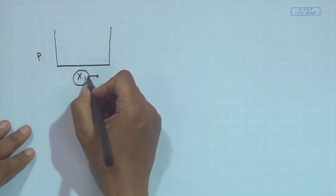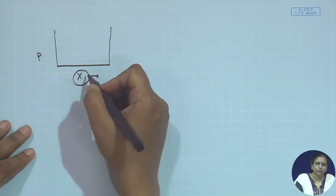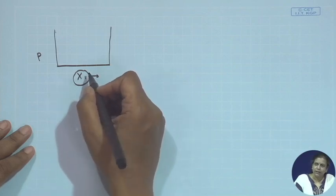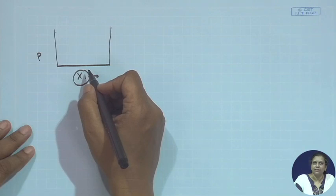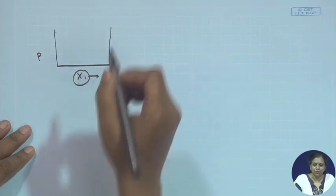Whenever we are plotting for this class, just to avoid any confusion, we would like to plot the mole fraction of the more volatile component on the x-axis. With that we plot the partial pressure of component one, partial pressure of component two, and the total pressure over the solution. Since this is the more volatile component, naturally the saturated vapor pressure of component one will be higher as compared to the saturated vapor pressure of component two.